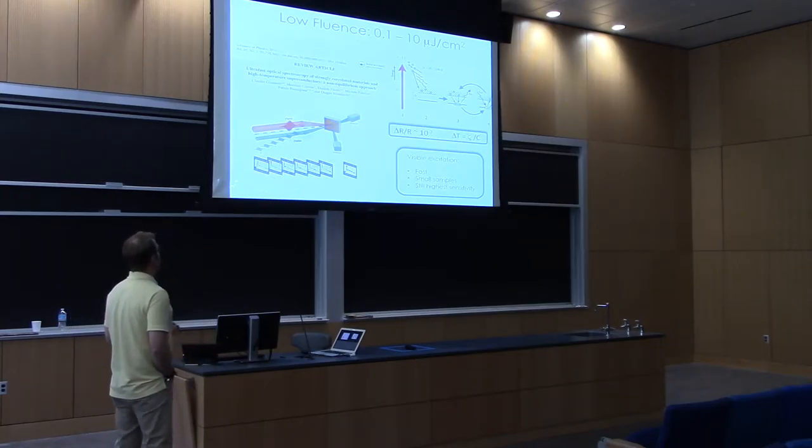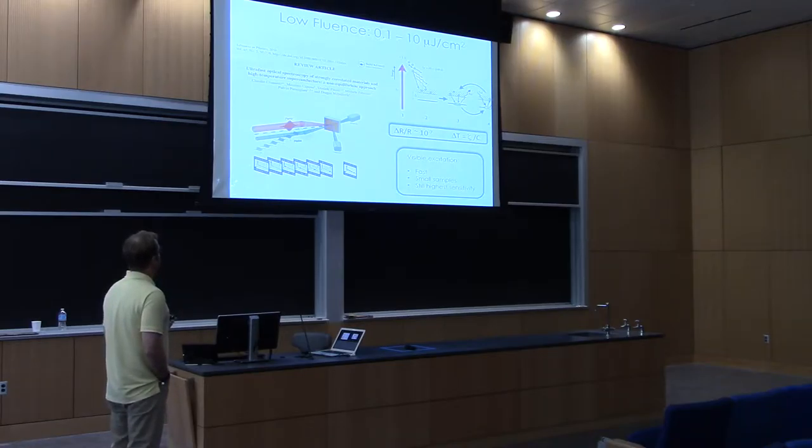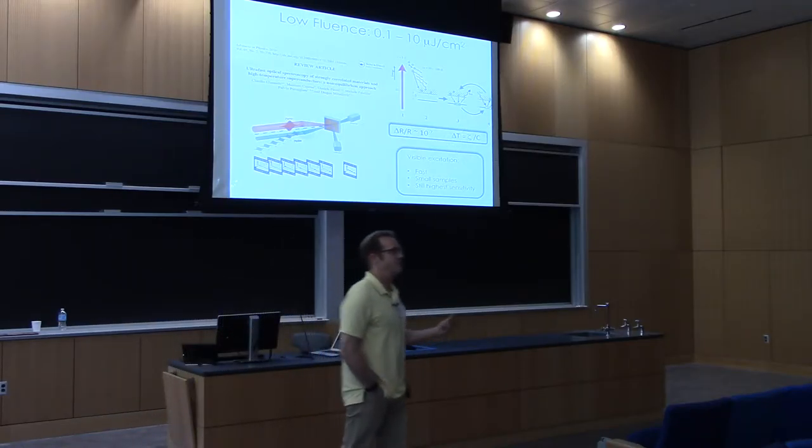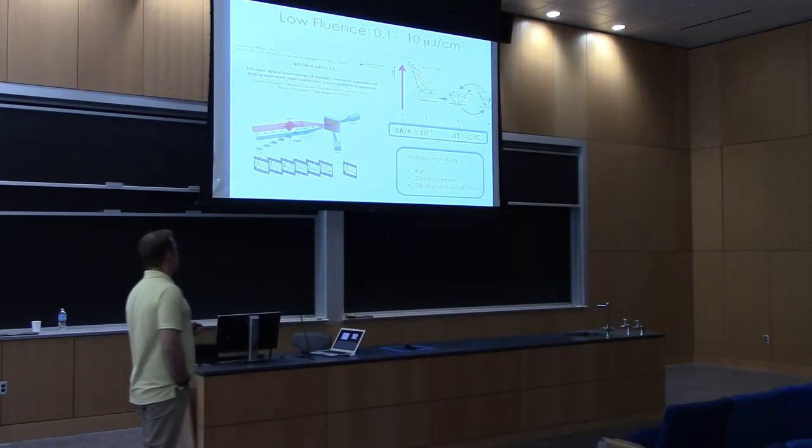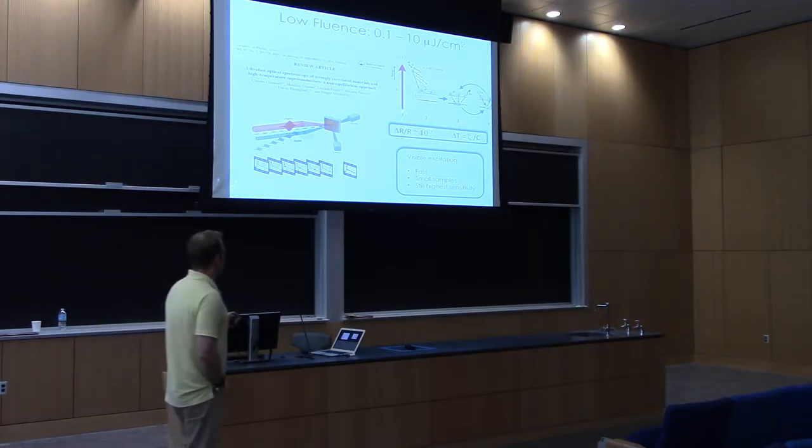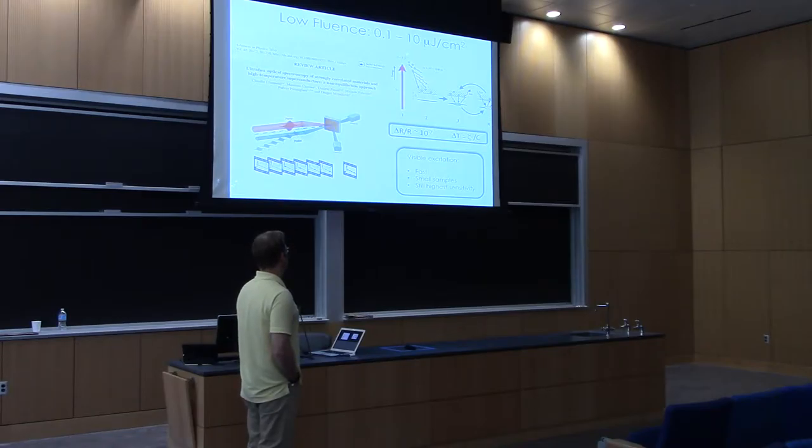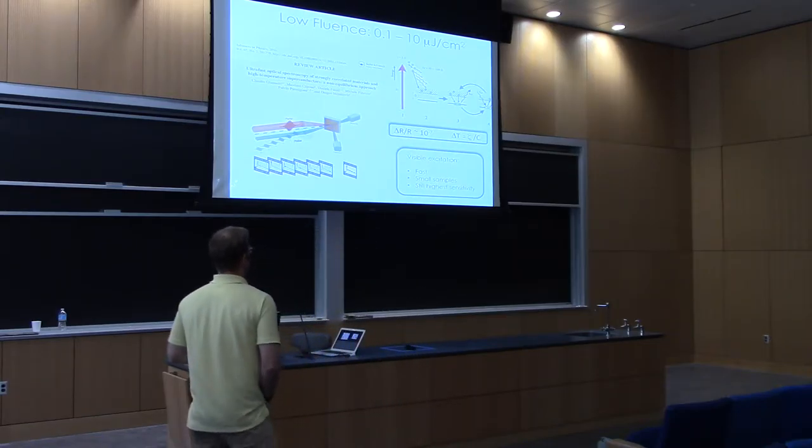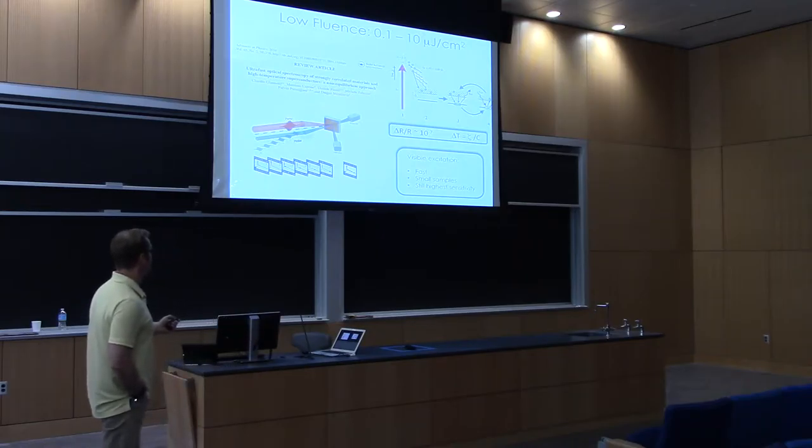Now moving on to this low-fluence regime. The low-fluence regime, again, is 0.1 to 10 microjoules per square centimeter. The reason why you want this low-fluence is quite simply because the first order of the induced temperature change is given by the energy density divided by the specific heat. And so you want to make sure that that temperature change is such that you remain in the phase that you want to do the dynamic studies on. The state-of-the-art in terms of doing these measurements is still with optical pump, optical probe, all visible. And when you really push things, you can measure reduced changes in the reflectivity of 10 to the minus 7.